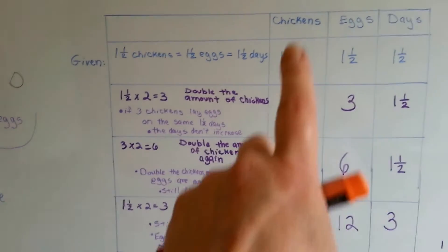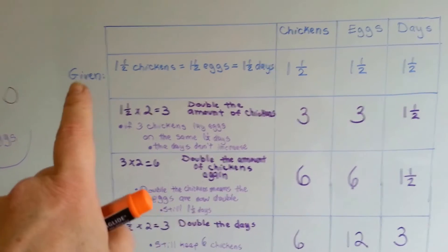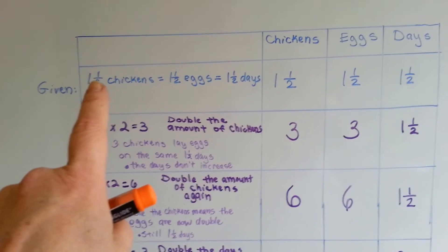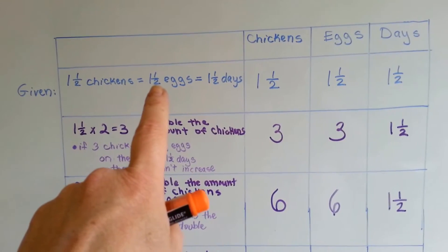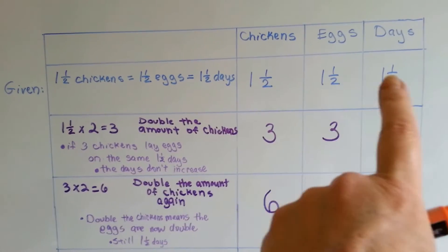So here's our table. We've got our chickens, our eggs, and our days, and this is what we're given. That one and a half chickens can do one and a half eggs in one and a half days. So we have that.